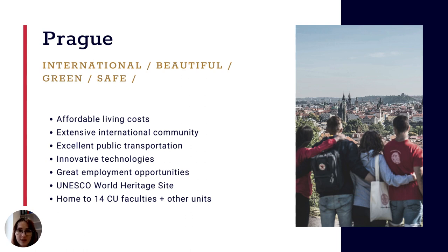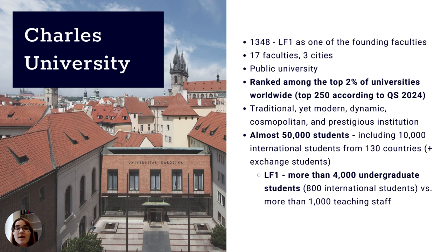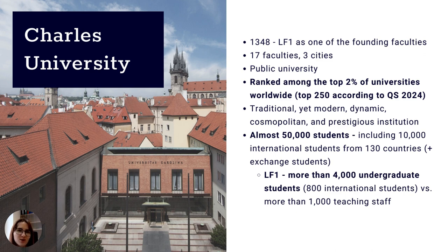Looking at Charles University, our history dates back to the 14th century when there were four founding faculties, and our medical faculty was one of them. Nowadays our university has 17 faculties located in three different cities in Czechia. Charles University is a public university and belongs to the top 2% of universities worldwide. We educate about 50,000 students, including about 10,000 international students — approximately 20% of our total student body.